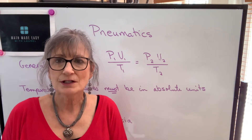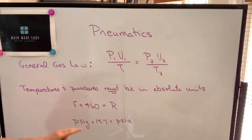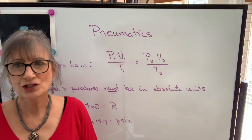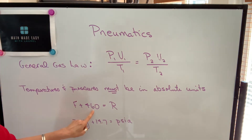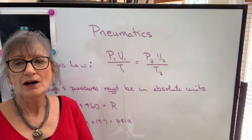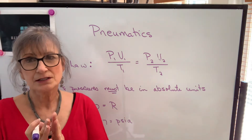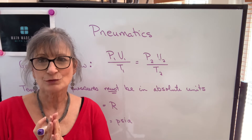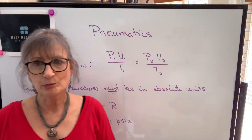Before we start, we have to have any temperatures and pressures in what's called absolute units. So if your temperature is in Fahrenheit, you have to change it to the absolute temperature called Rankine by adding 460 to the Fahrenheit temperature. For pressure, if you have a gauge pressure — indicated as pounds per square inch gauge — you have to add 14.7 to get the absolute pressure. On a gauge it starts at zero when there's already an atmosphere of pressure, which is 14.7, so you have to change it to absolute before plugging into the gas laws.